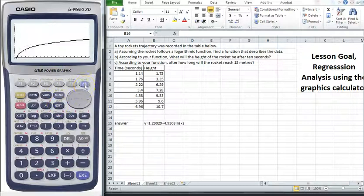And then I'll do my g solve again. According to your function, after how long will the rocket reach 15 meters? This is an x calc, because we know the y is 15. We want to know after how long. So 15 in there. And so you can see, after 16.13 seconds, the rocket will be 15 meters high.